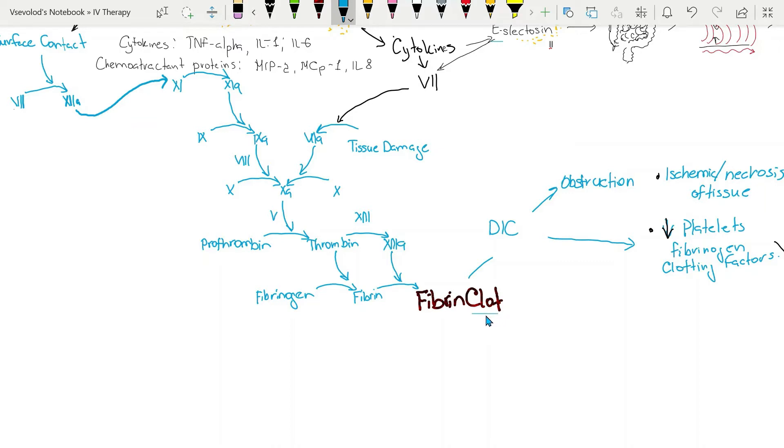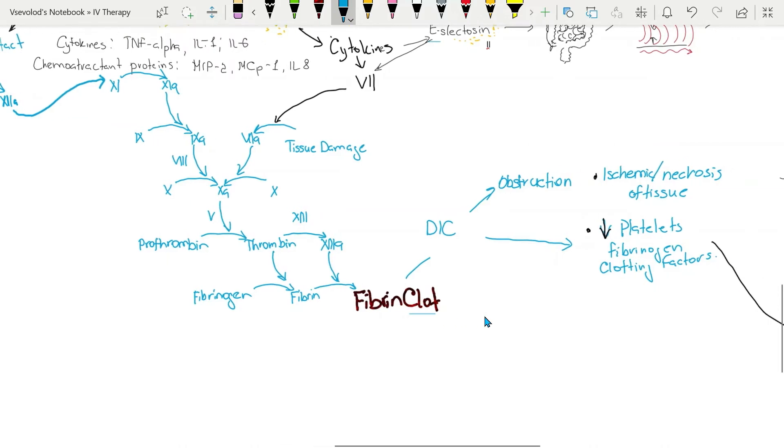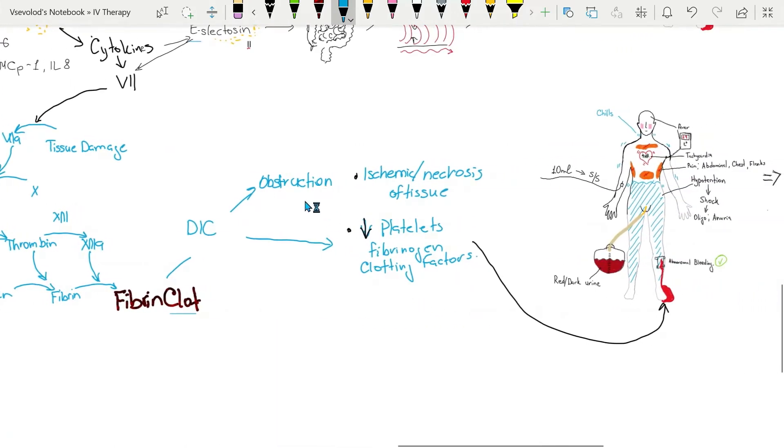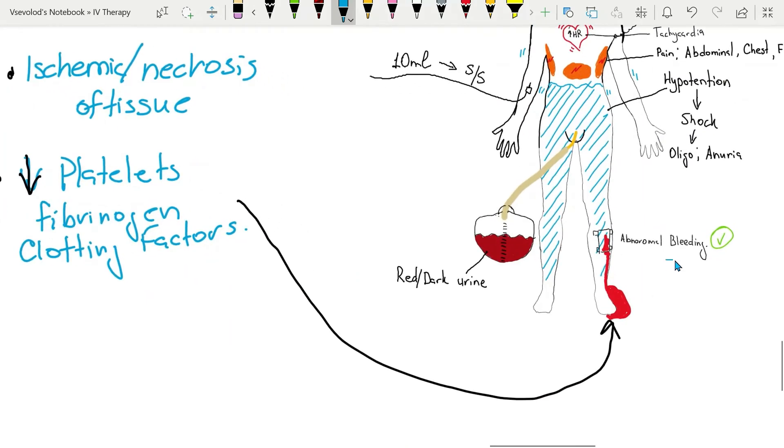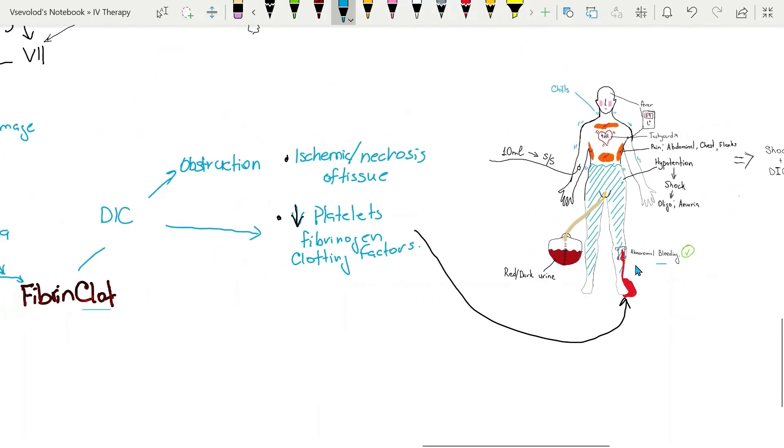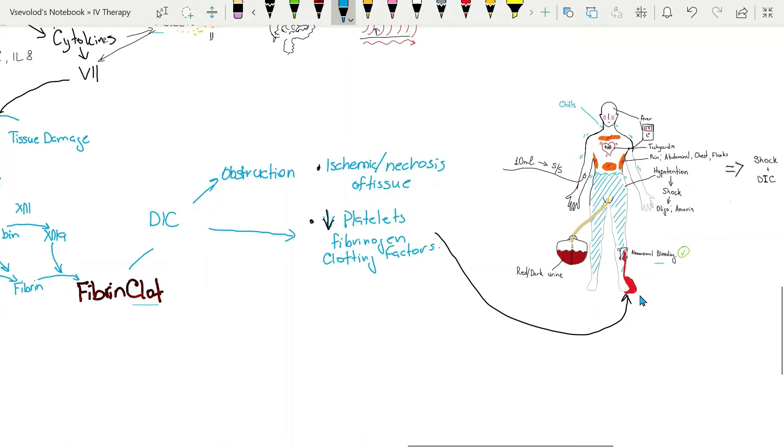These fibrin clots are formed all over the body. This will cause obstruction of small capillaries all over the body, which will lead to necrosis. And in second instance, depletion of platelets and clotting factors will lead to bleeding at sites where bleeding is more susceptible, like an injured extremity.